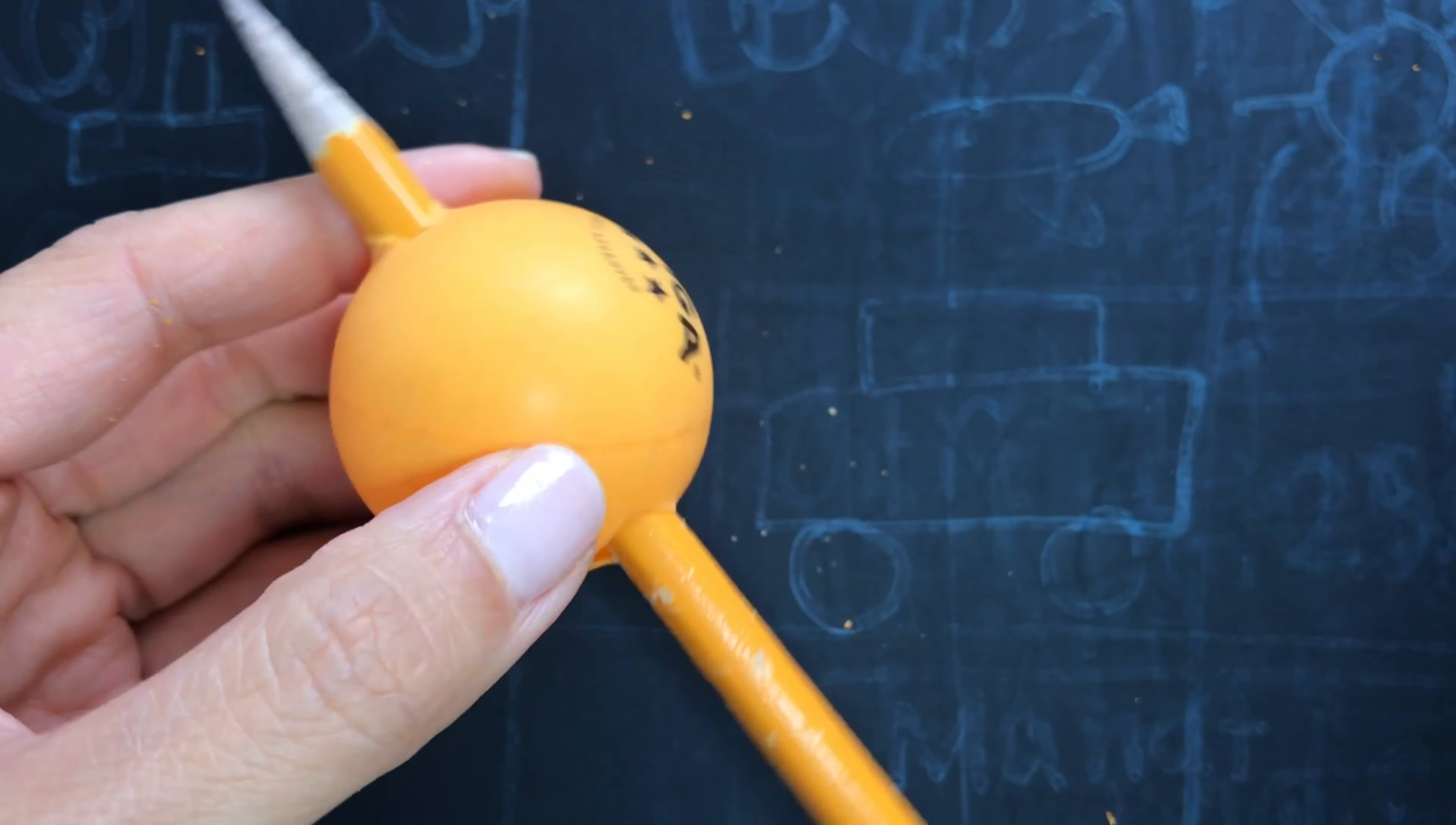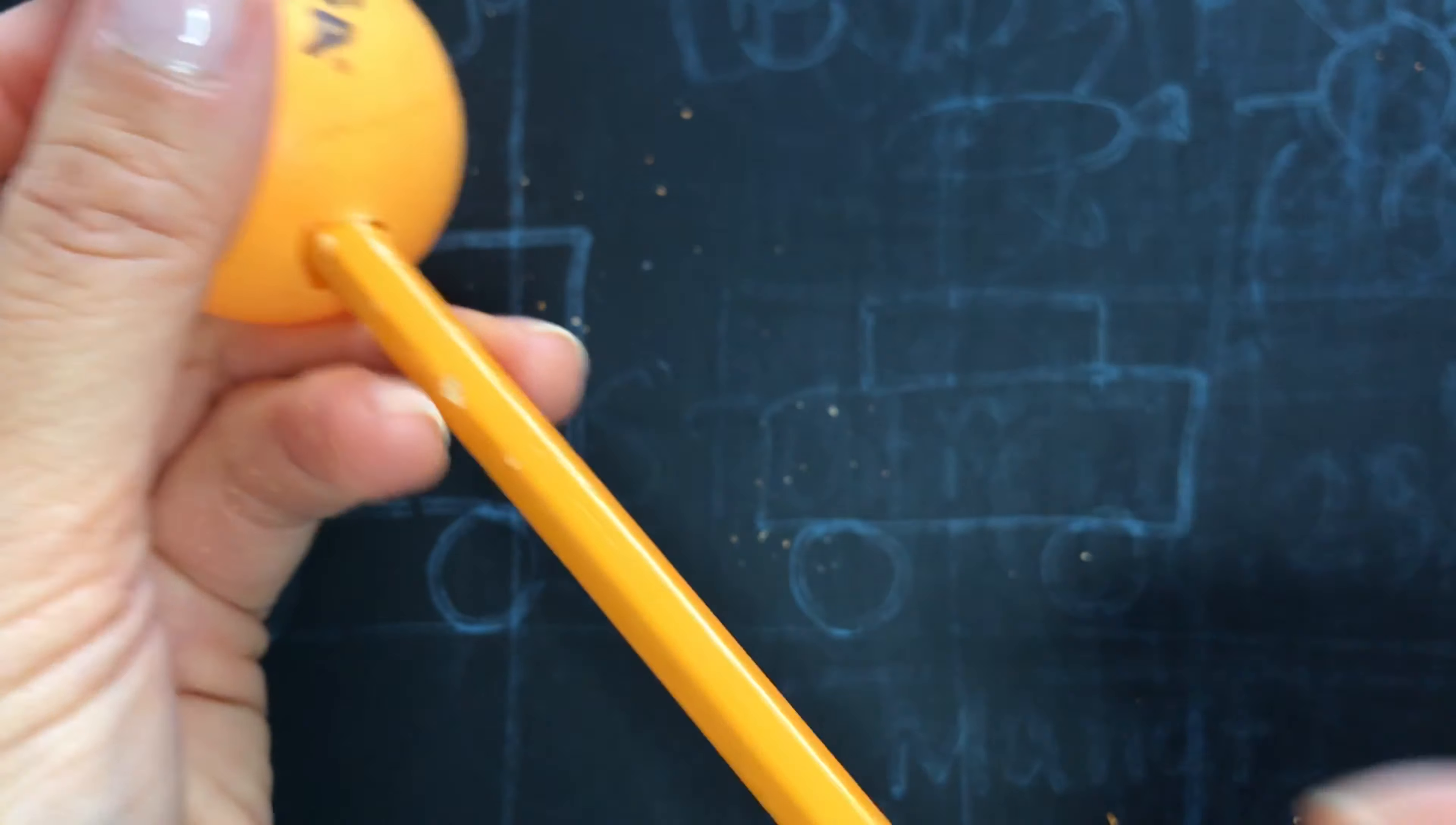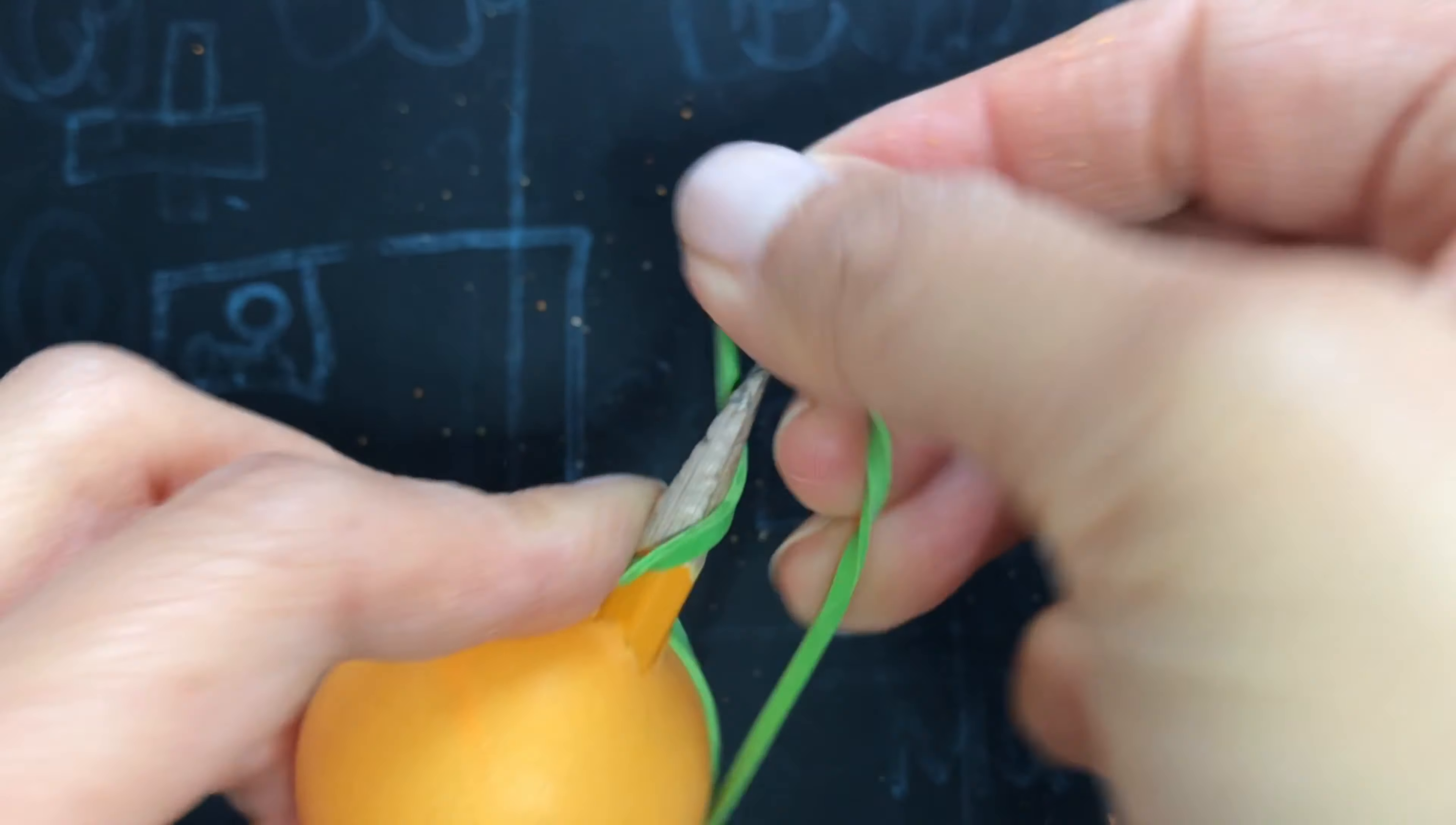So now, let's say it gets a little loose while using. You can put the rubber band at the end, and this one can go hold the tip.